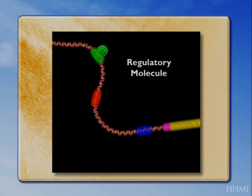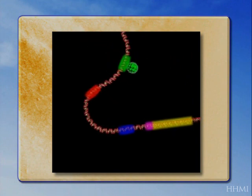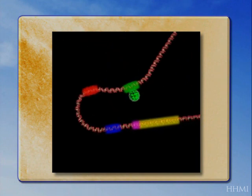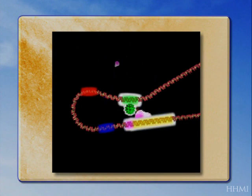Typically, a gene will be surrounded by multiple switches. That allows the gene to be turned on at different times and places under the control of different signals and regulatory molecules.